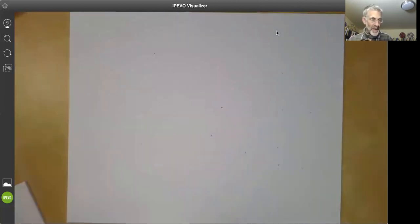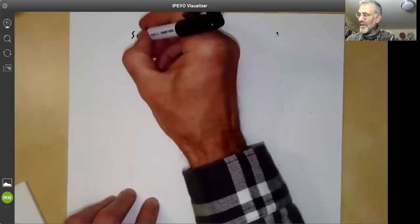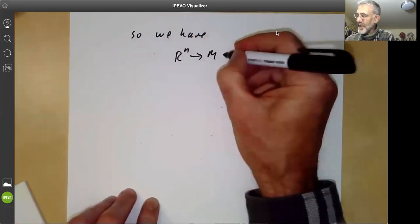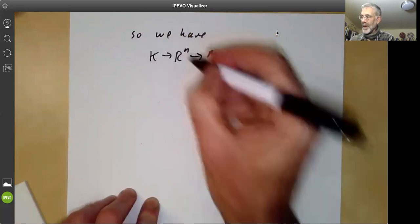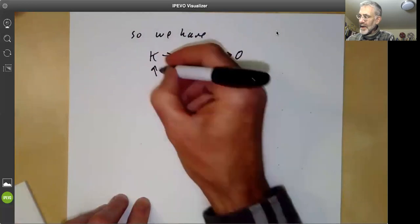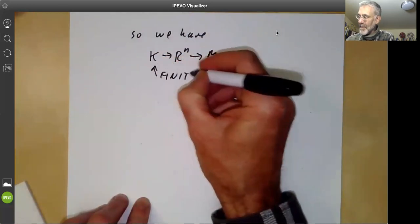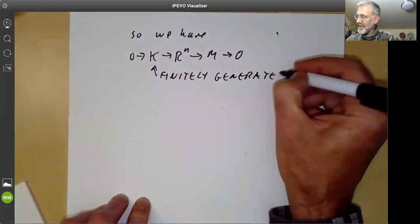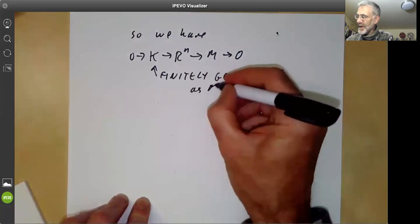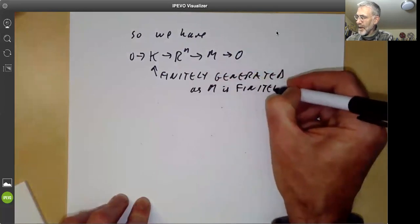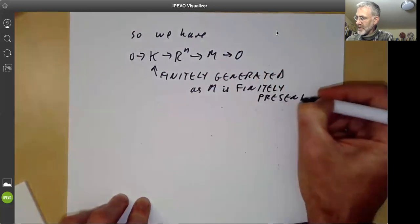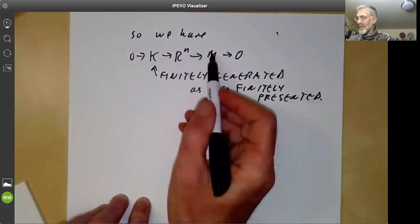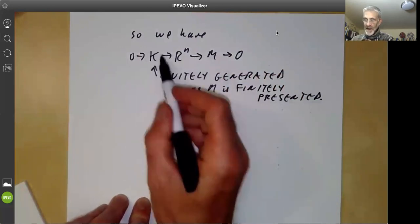And so let's look at what we've got so far. So we have R to the N maps onto M and it's got a kernel. And this kernel K is finitely generated. Let's make it injective. And it's finitely generated as M is finitely presented. It's not very difficult to check that if M is finitely presented, then any kernel from a free module of finite rank onto M has a finite kernel.